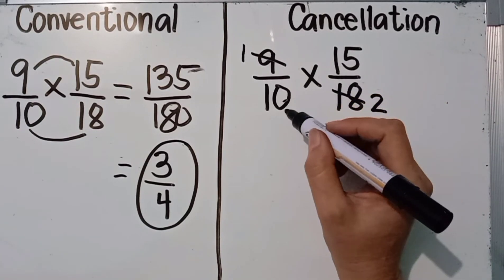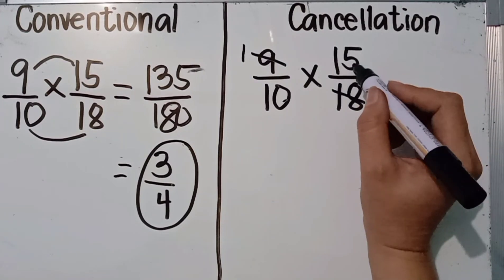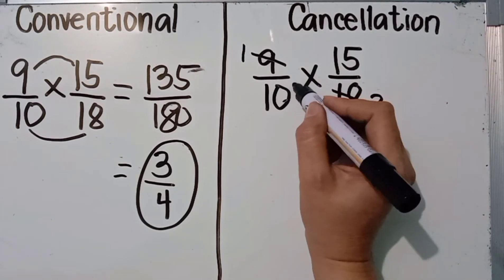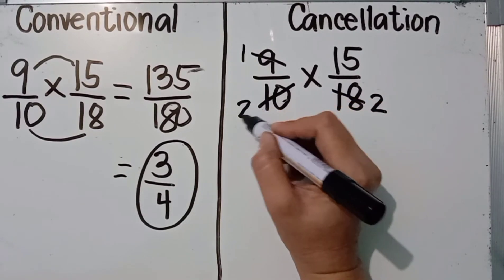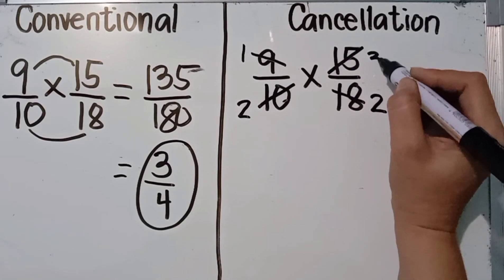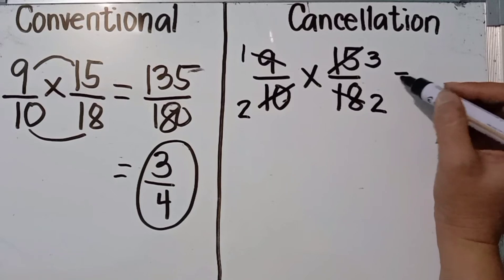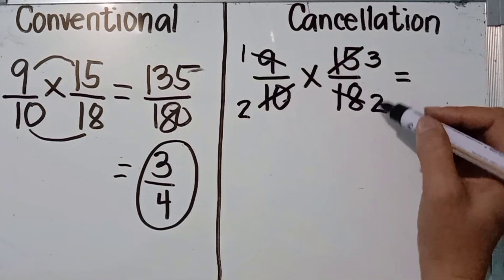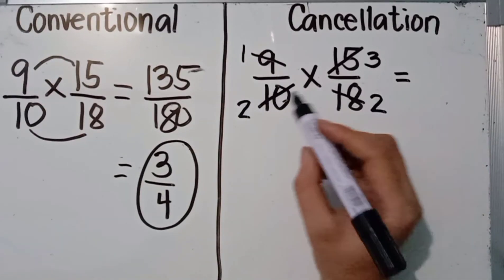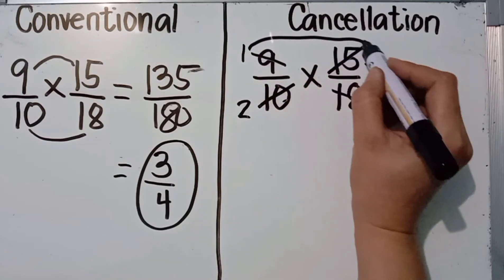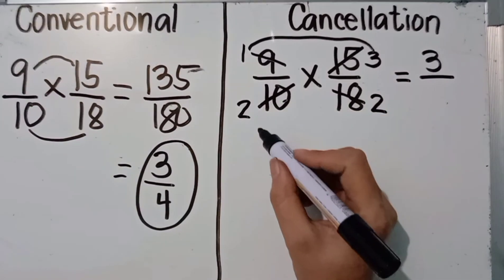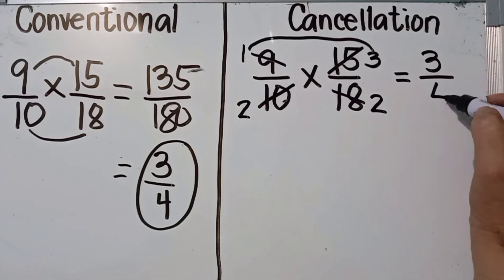Fifteen and ten have a common factor of five: ten divided by five is two, and fifteen divided by five is three. Now check for more common factors among the remaining numbers: one, three, two, and two — there are none. So multiply the numerators: one times three equals three. Multiply the denominators: two times two equals four.